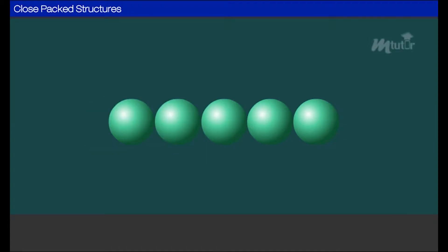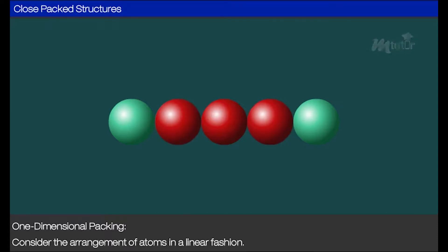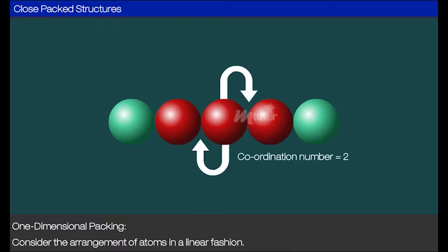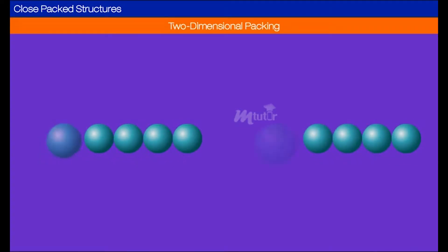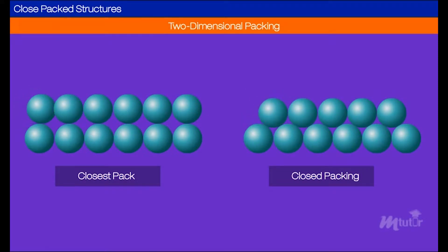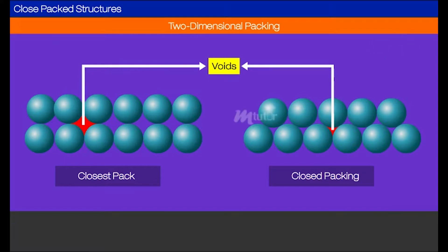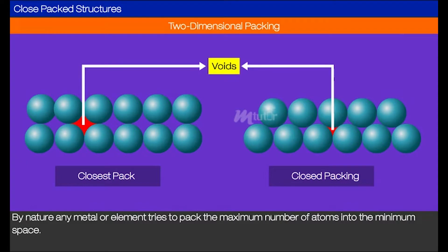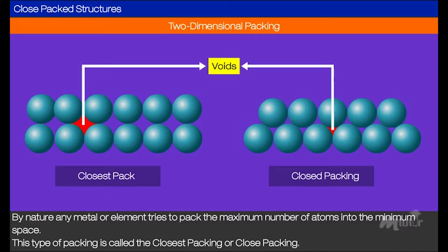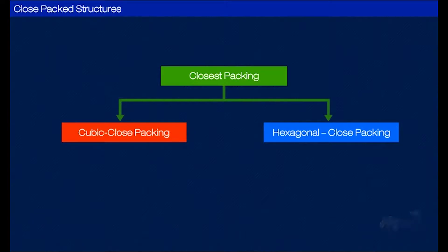Consider the atoms of a metal to be hard spheres. On packing these spheres in one dimension, we would end up with an arrangement of atoms in a linear fashion with a coordination number of 2. While arranging in two-dimensional packing, we can either arrange the second row of spheres one below the other, or place the second row not exactly below so as to minimize the spacing. This gap is also called a void. By nature, any metal or element tries to pack the maximum number of atoms into the minimum space. This type of packing is called closest packing or close packing, further classified as cubic close packing or square packing and hexagonal close packing.